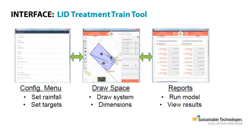The LID treatment train tool is a free tool designed to streamline the planning and approval process. It does so by selecting and organizing the results of the model simulations and comparisons in a way that is clear and aligned with the Ministry of Environment and Climate Change guidelines, eliminating any additional downloads and computations.